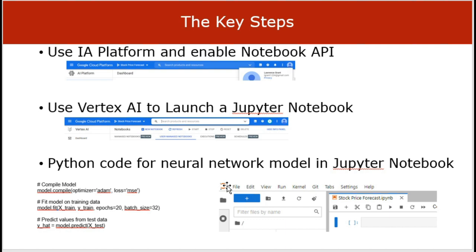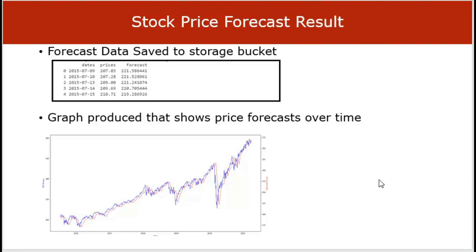Once we launch the Jupyter notebook, the code that trains the neural network model and produces the stock price prediction can be pasted into the cell of the notebook, and the play button can be clicked to execute the code. Once executed, the results will be saved in the storage bucket and will show the dates along with the prices of the SPY ETF for those dates and the forecasts made by the model.